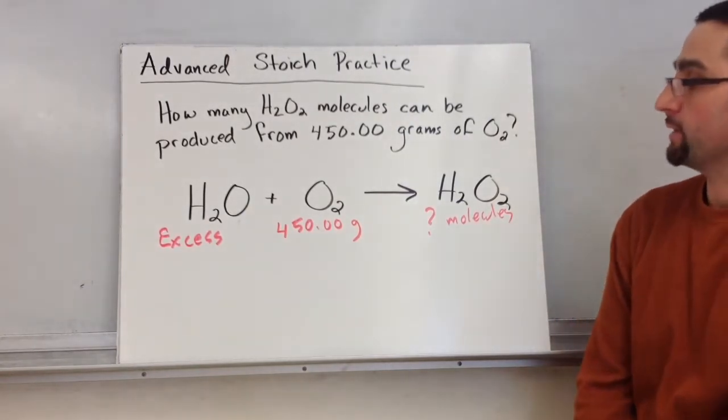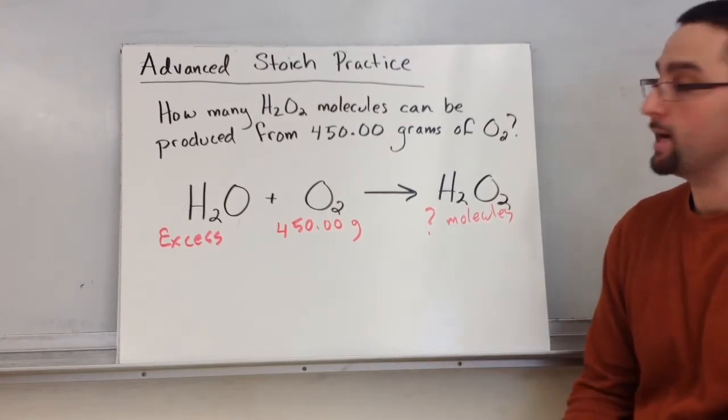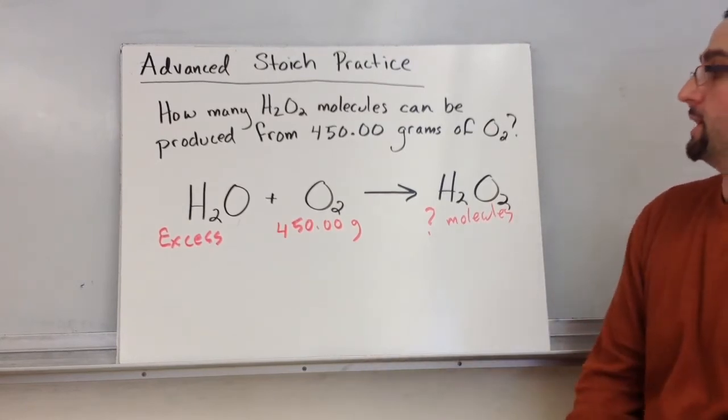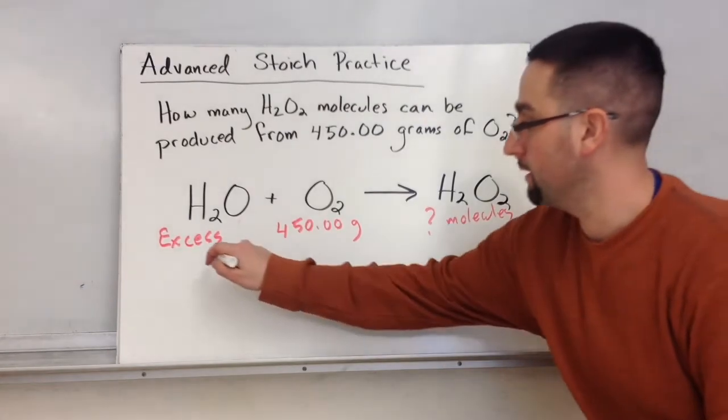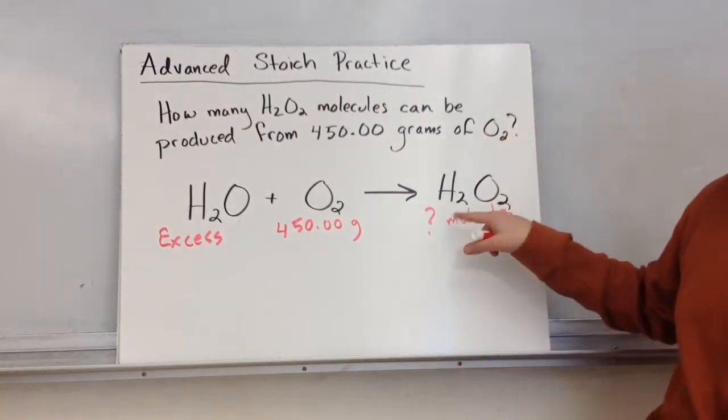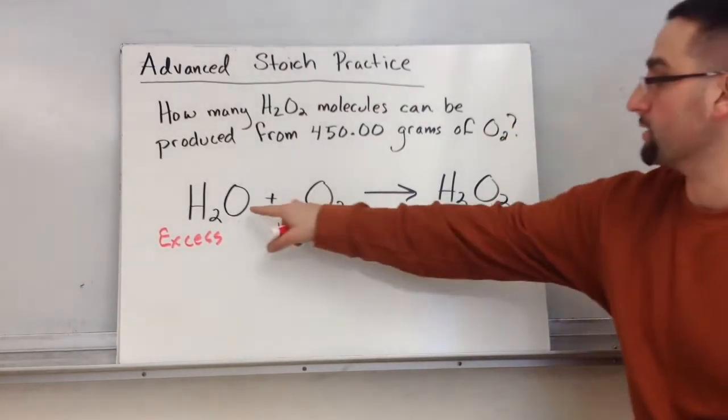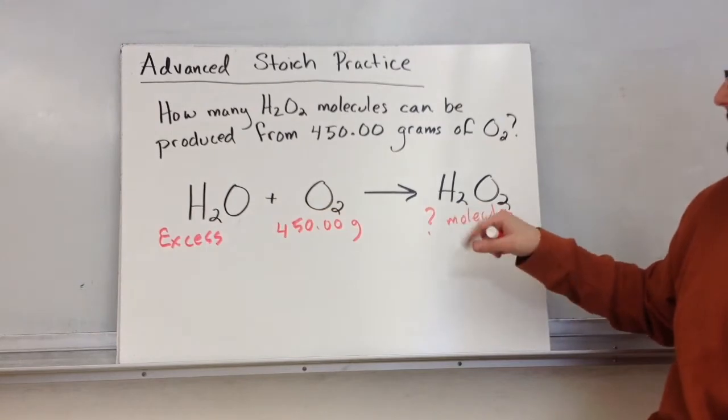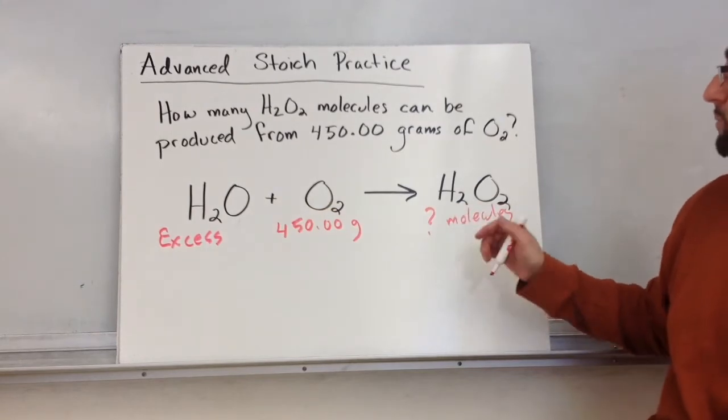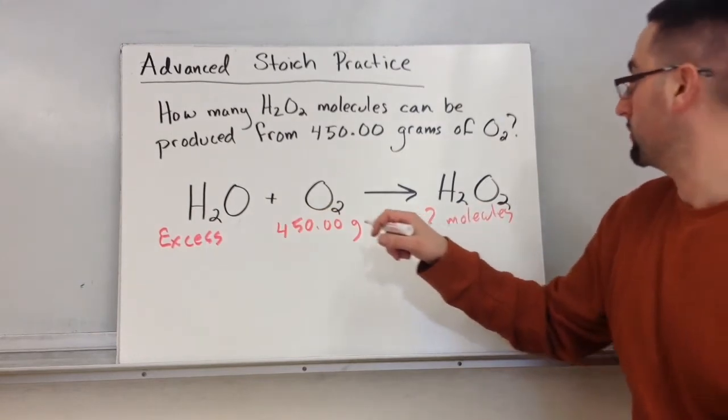All right, so let's see how you did. First thing I want to do, like any stoic, is I want to balance this equation. So we're going to balance the equation. If I balance this, I find out there's two oxygens, three oxygens, two waters.